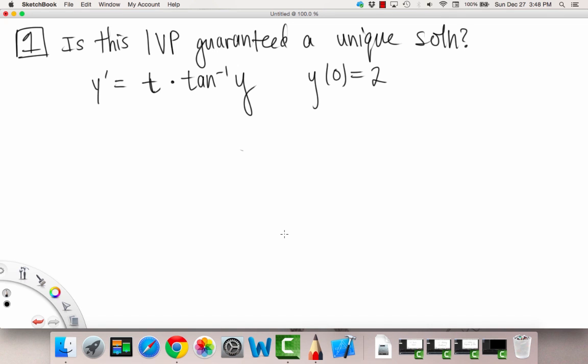Is this IVP guaranteed a unique solution? We're given an ODE: y' = t·tan⁻¹(y). And our initial condition is (0,2), so when t equals 0, then y equals 2.